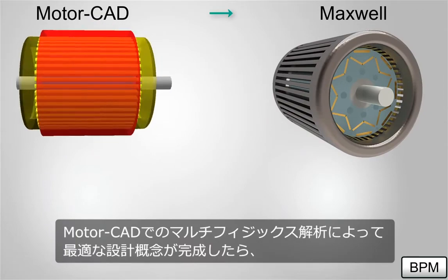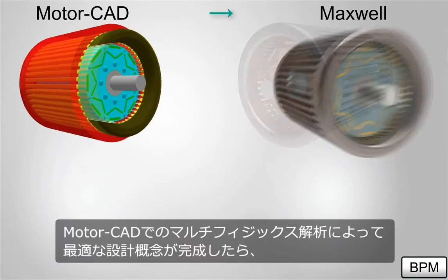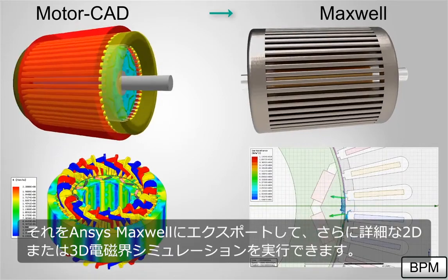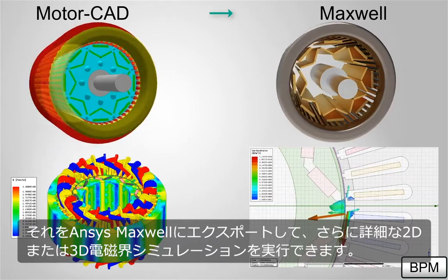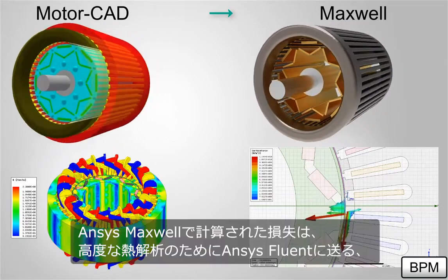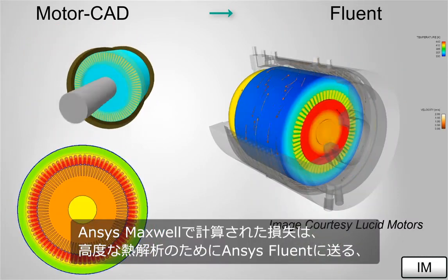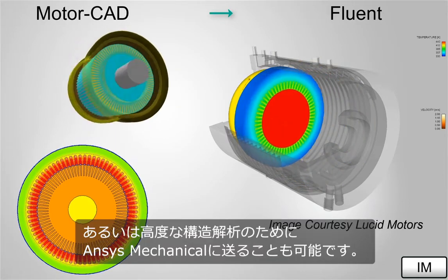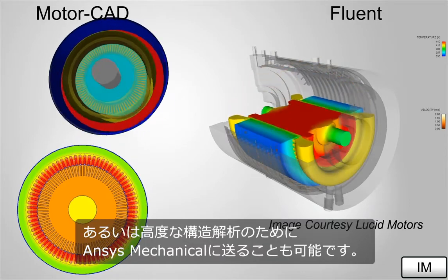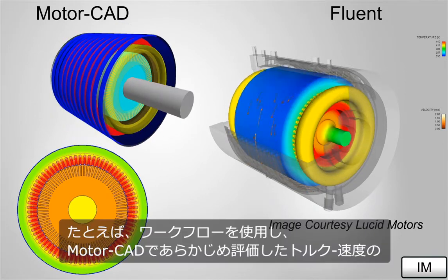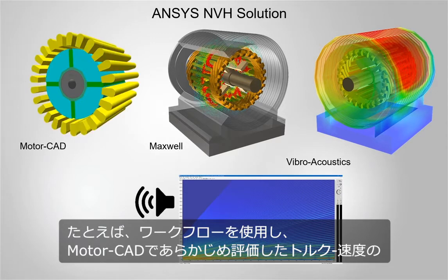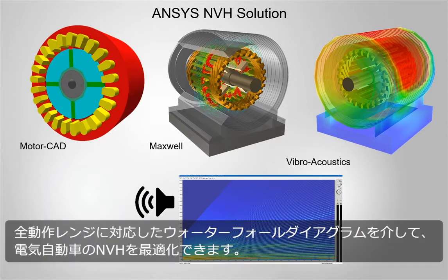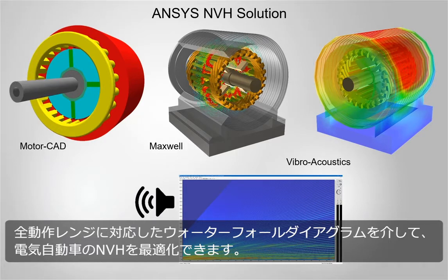When the multi-physics analysis in MotorCAD results in an optimal design concept, it is exported to ANSYS Maxwell for detailed 2D or 3D electromagnetic simulations. The losses calculated in ANSYS Maxwell are transferred to perform advanced thermal and structural analysis in ANSYS Fluent and ANSYS Mechanical respectively. For example, the workflow is used to optimize the NVH of an electric vehicle through a waterfall diagram corresponding to the full torque speed operating range previously evaluated by MotorCAD.